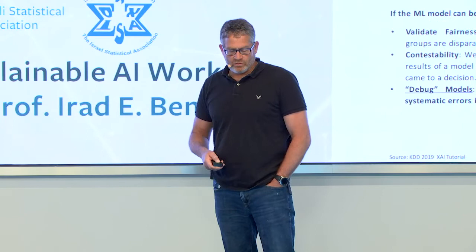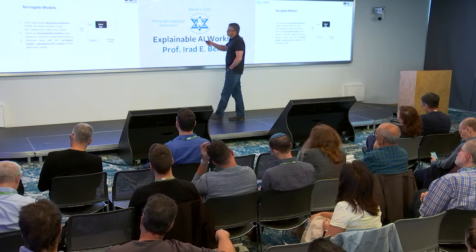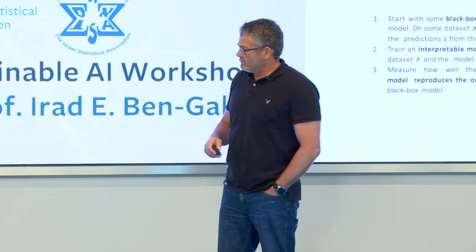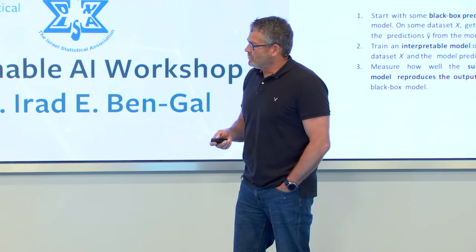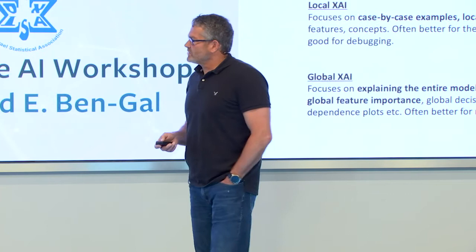Most XAI approaches are based on surrogate modeling. You have your data, your black box model — whether neural networks, random forests, or others — and you get the prediction out of the model. You use both the data and the prediction to construct a surrogate model that represents the same output locally. This surrogate captures the main features and is more explainable, so you can use it to explain why a complex neural network reached certain decisions.